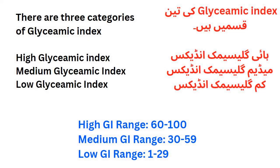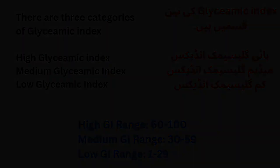There are three categories of the glycemic index. High glycemic index range starts from 60 and goes up to 100. Medium glycemic index range starts from 30 and goes up to 60. Low glycemic index range starts from 0 and goes up to 30.